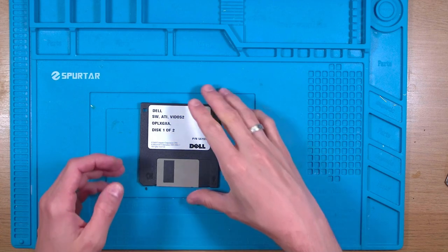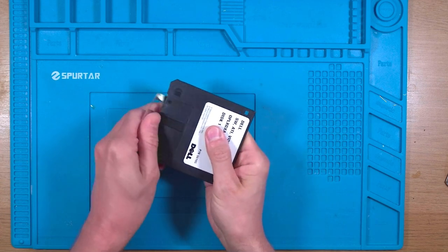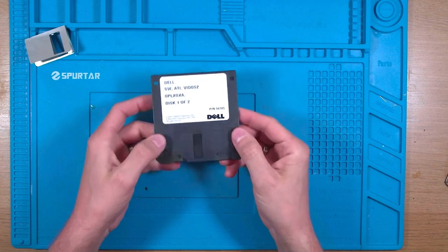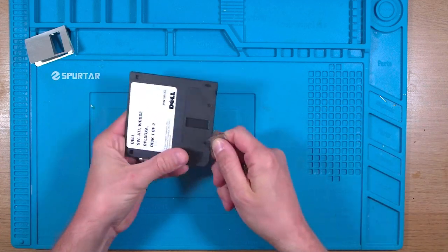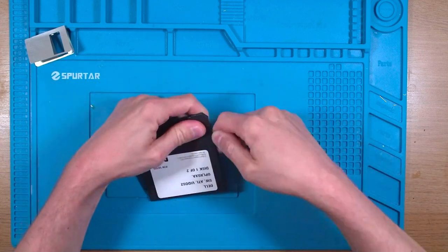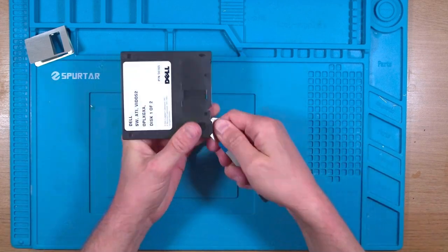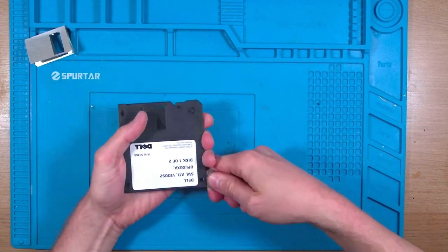First we need to get the donor floppy disk apart without damaging it and I'll start by ripping the shutter off. Getting the disk apart can actually be quite difficult and some are easier than others, and I'll start by working my way around with this spudger tool slowly prizing the two sides apart.